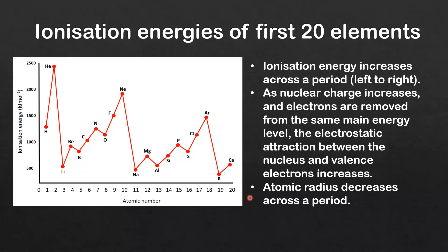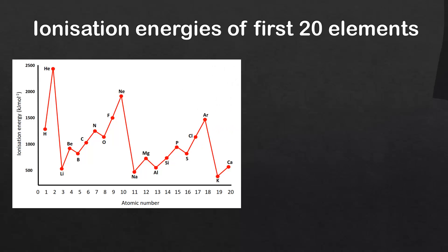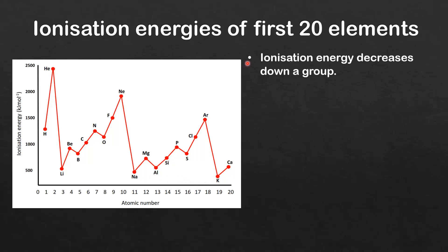Next we look at the trend in ionization energy down a group. Starting with group 18, the noble gases — helium, neon, and argon — ionization energy decreases down the group. Looking at group 1, the alkali metals — lithium, sodium, and potassium — ionization energy again decreases down the group.